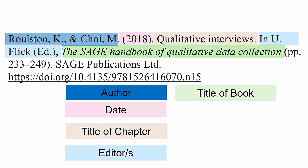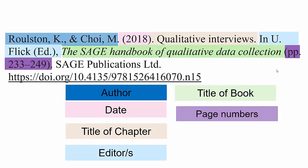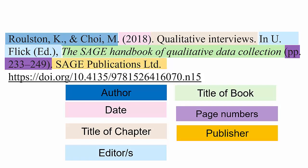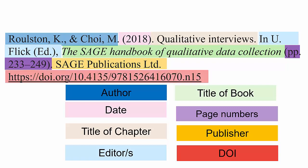Next is the title of the book, which is in the same format as before. Within parentheses are the page numbers the chapter is on, with 'pp.' before the number range. This is followed by the publisher's name in the same format. Finally, e-book chapters are now assigned DOIs, just like journal articles. If you've used the e-book version and a DOI is available, you should include it as a live link.